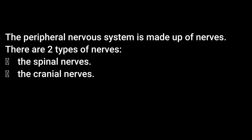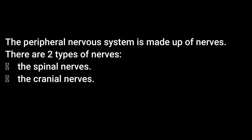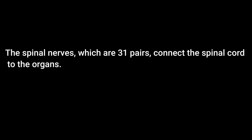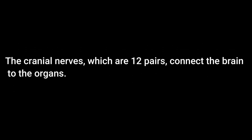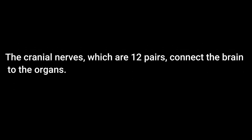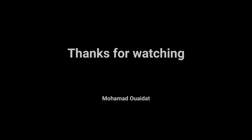The peripheral nervous system is made up of nerves. There are two types of nerves: the spinal nerves and the cranial nerves. The spinal nerves, which are 31 pairs, connect the spinal cord to the organs. The cranial nerves, which are 12 pairs, connect the brain to the organs.